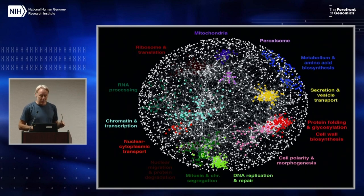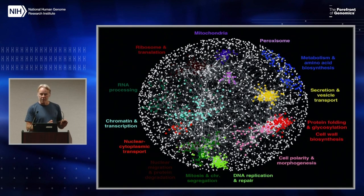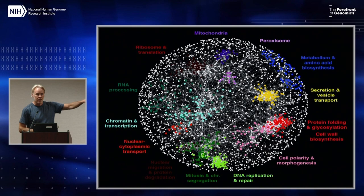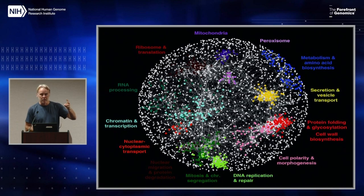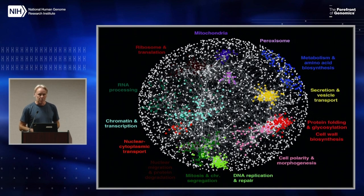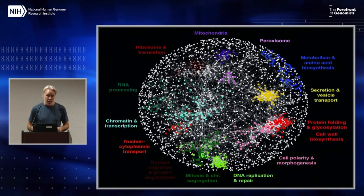Now, they didn't study ribosome function or RNA processing or any of the functions that you see listed on this diagram. All they looked at is growth in permissive media, and they tracked pairwise epistasis between the genes. The graph itself is constructed in a particular way — it's called a topological overlap map — and it's actually the same algorithm that Facebook uses to suggest friends to you.